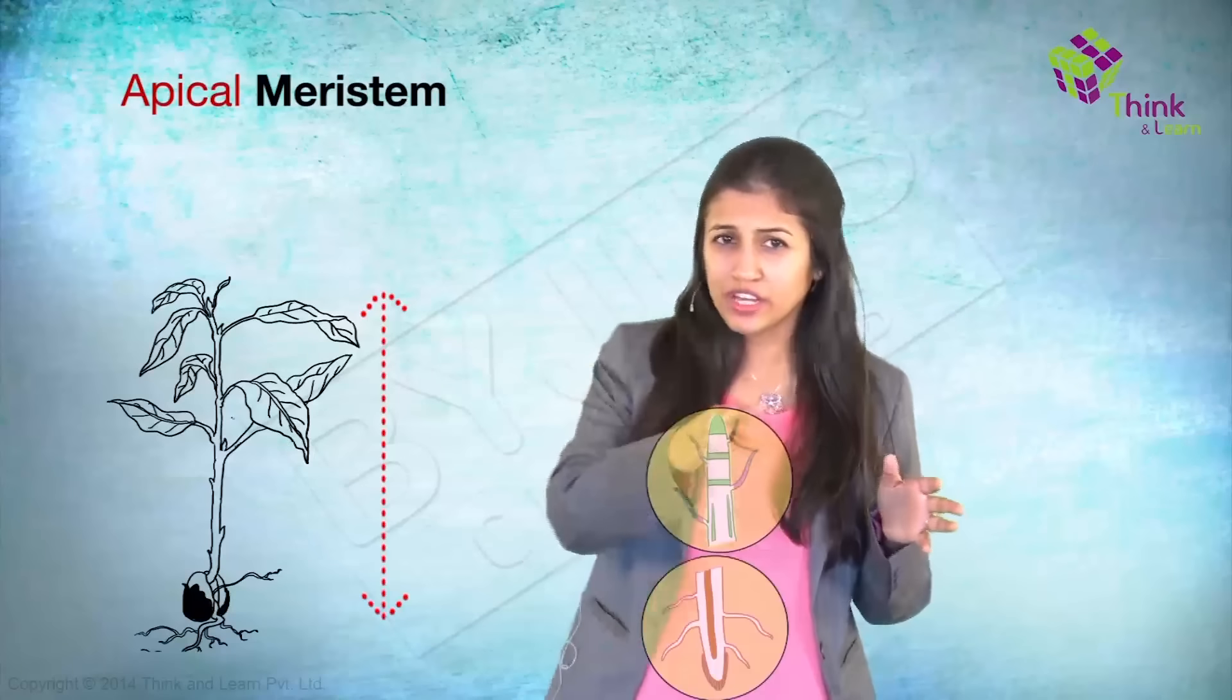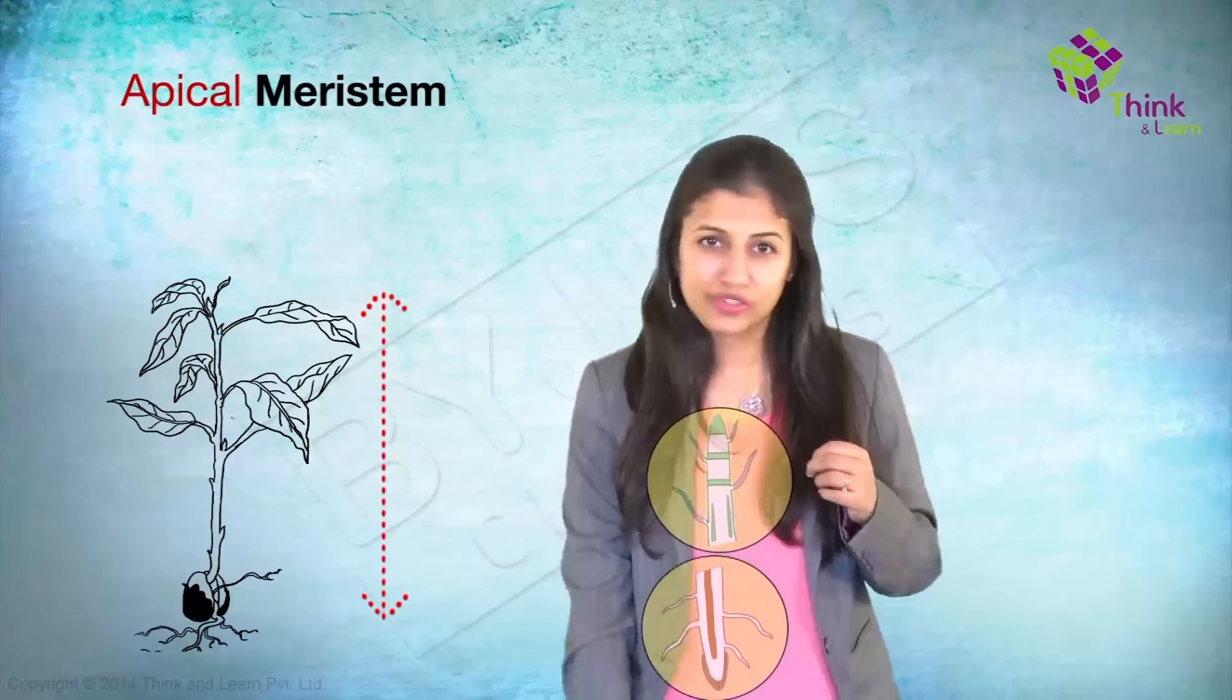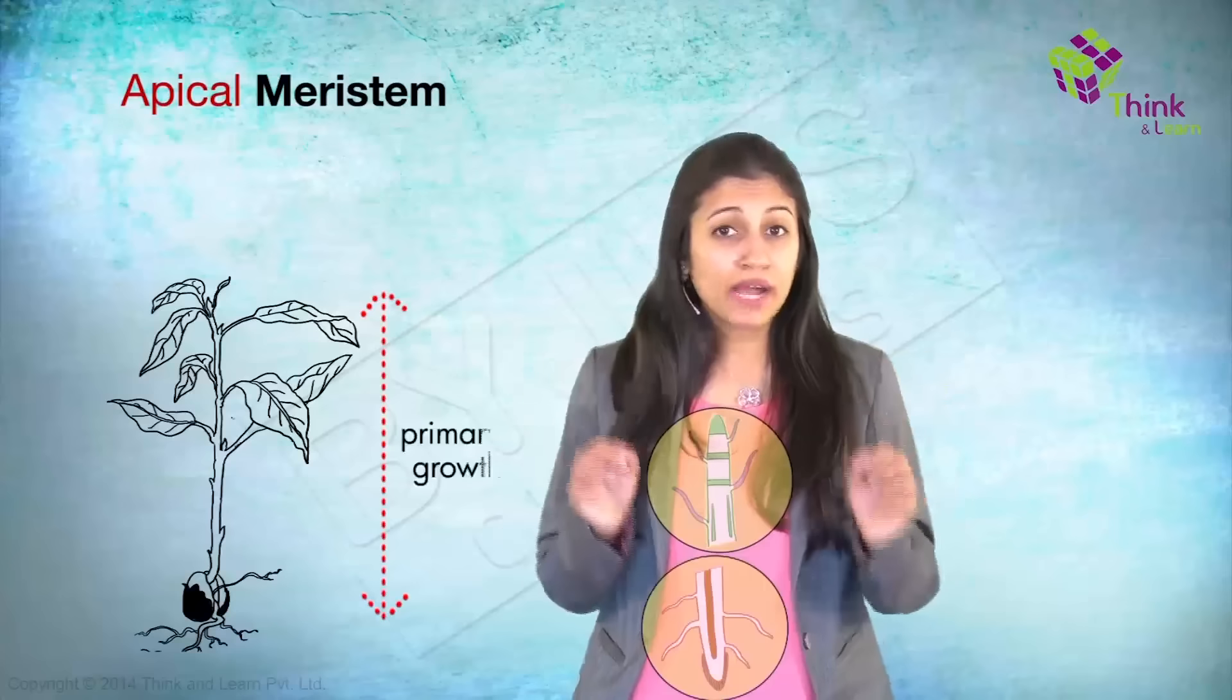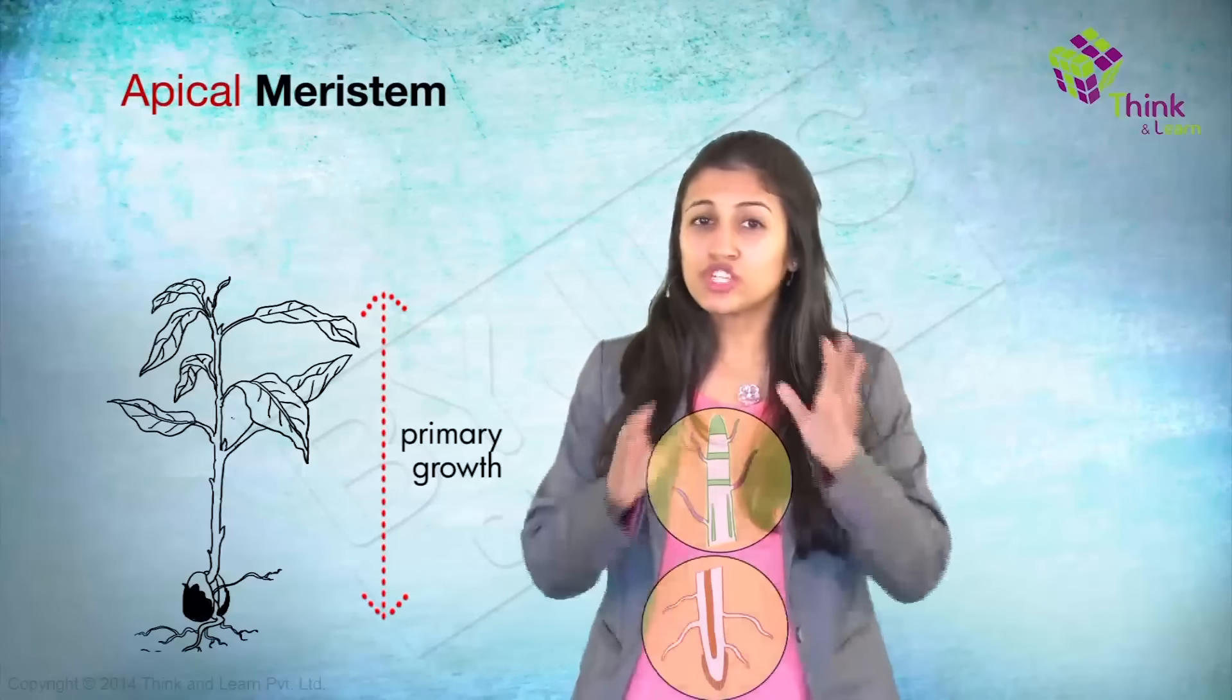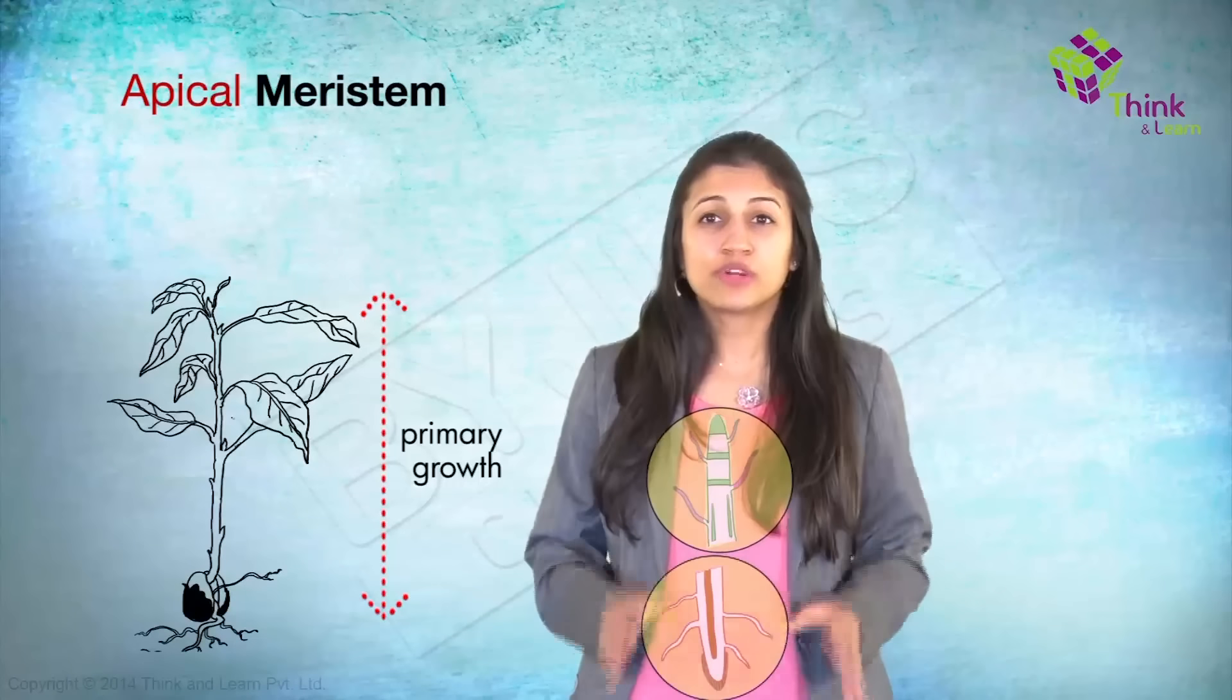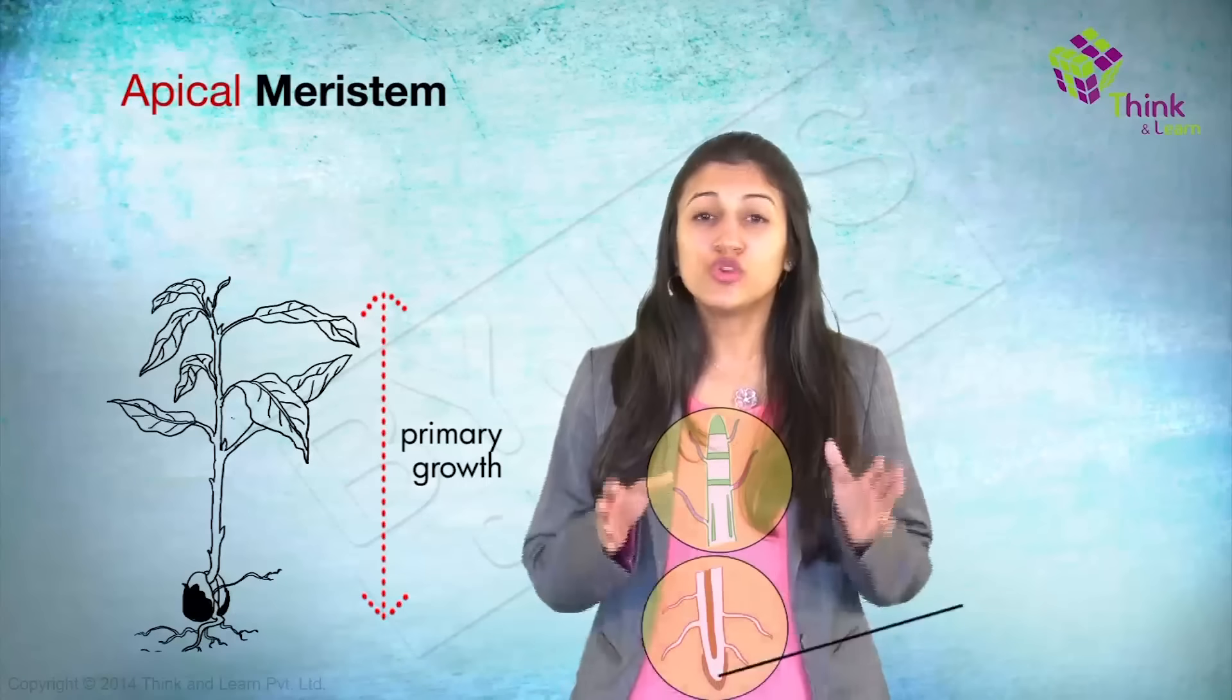They would be found in the stem, that's right over here, as well as in the roots. This vertical growth is also called primary growth. Now, since the root meristem goes into the soil and gets its hands dirty, it's got a protection for itself called the root cap.